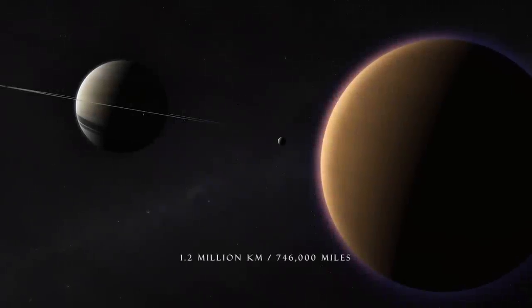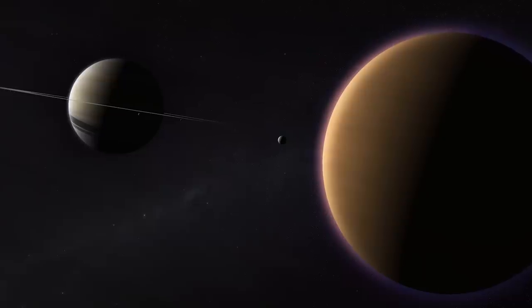Orbiting 1.2 million kilometers from Saturn, Titan takes only 16 days to complete one orbit.